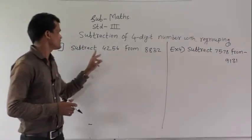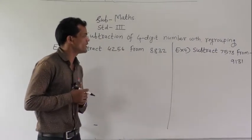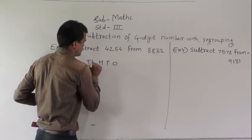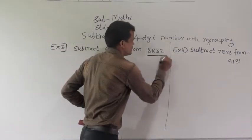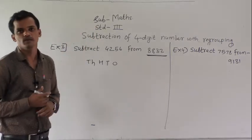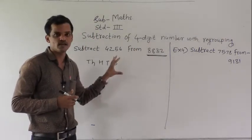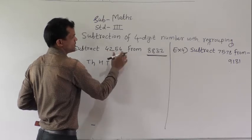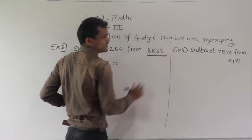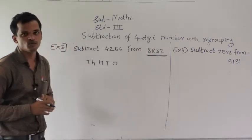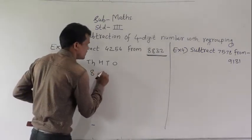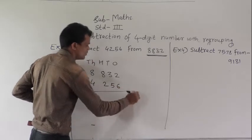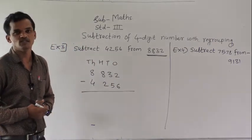Next example: subtract 4,256 from 8,832. Arrange those two numbers into columns and then subtract. Always subtract the smaller number from the bigger number, so write the bigger number 8,832 on top and under that number write 4,256. Now subtract, starting from the ones place.